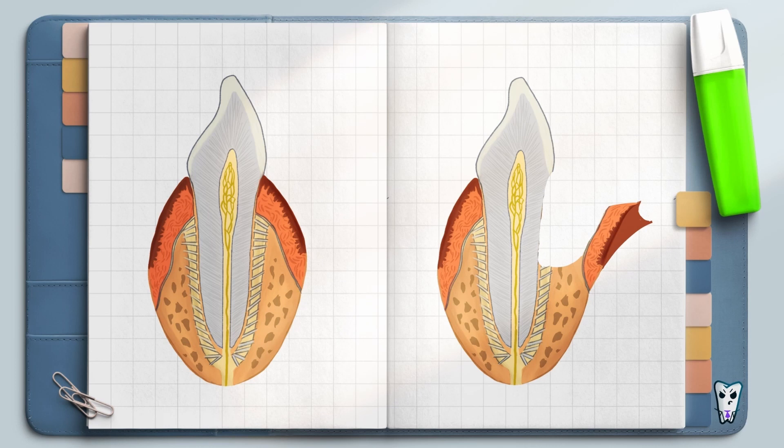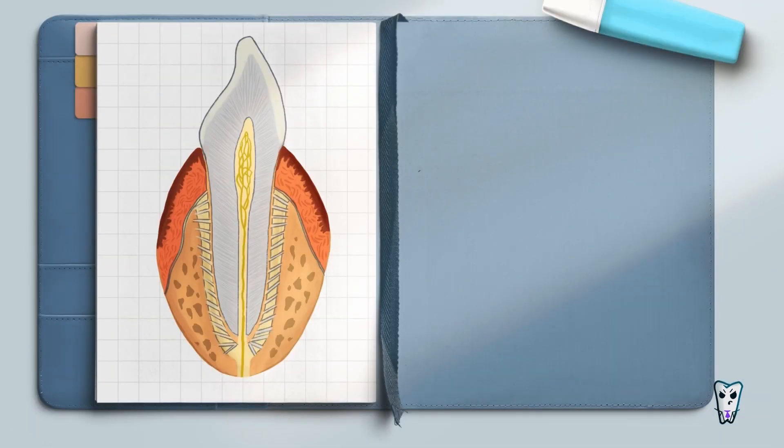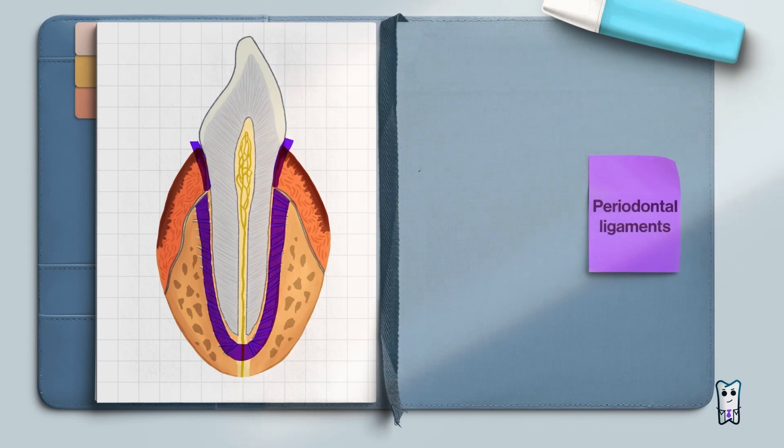In order for you to comprehend what extraction is and how it's done, first of all, let's clarify what actually holds the tooth in place. These are the periodontal ligaments. They can be categorized into two distinct types, each serving a specific purpose.